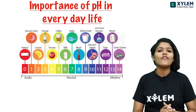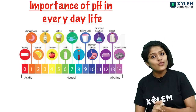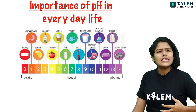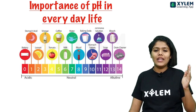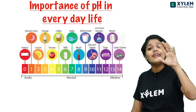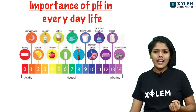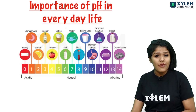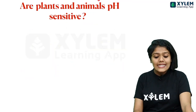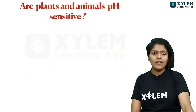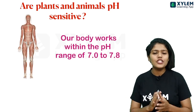Now we can move to the importance of pH in our everyday life. pH value has a very important influence on our daily lives — from the food we eat to many other fields. The first point: are plants and animals pH sensitive? For human beings, our body needs a pH range of 7.0 to 7.8 to function properly. This pH must be maintained in our body.